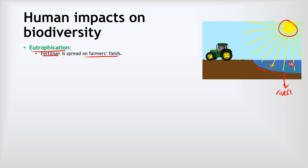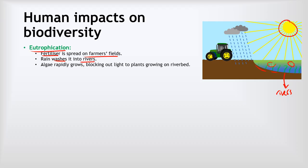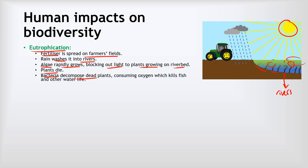In eutrophication, the whole balance of that system gets messed up by human activities. Fertilizer is spread on farmers' fields, which helps their crops grow faster, increasing yields and making food cheaper. But if it rains, some of that fertilizer will be washed into the rivers. When it gets into the rivers, it causes algae to rapidly grow—that's what this green slime is on the diagram. That algae really quickly grows and blocks out the light to the plants growing on the riverbed. The Sun's rays are no longer reaching the riverbed, so these plants will die.